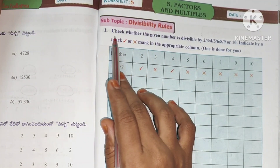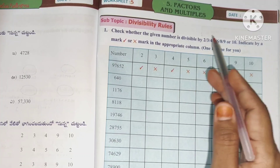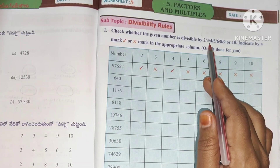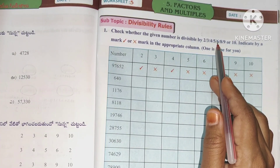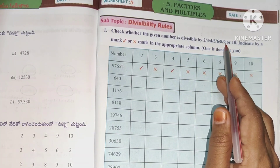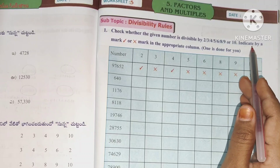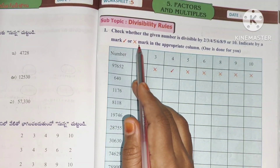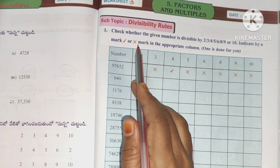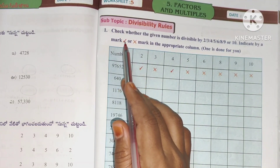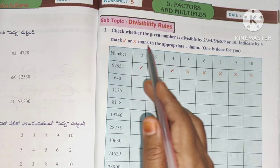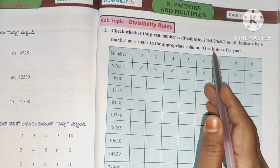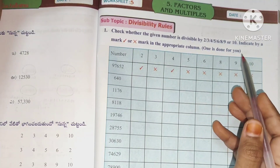First one: check whether the given number is divisible by 2, 3, 4, 5, 6, 8, 9, or 10. Indicate by a tick mark or cross mark in the appropriate column. One is done for you.